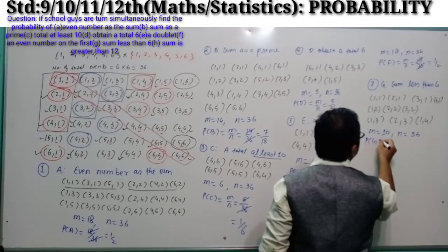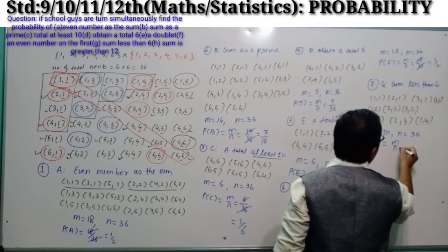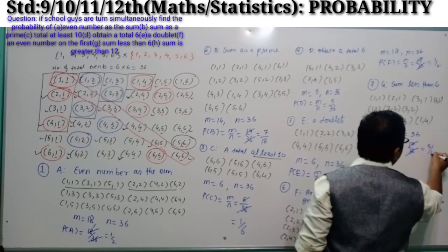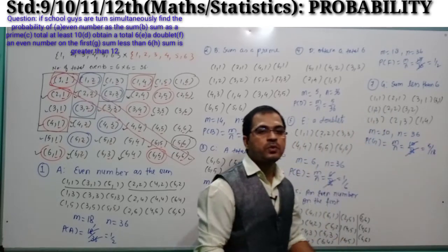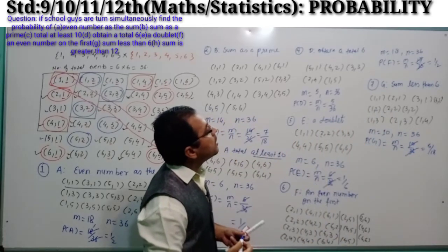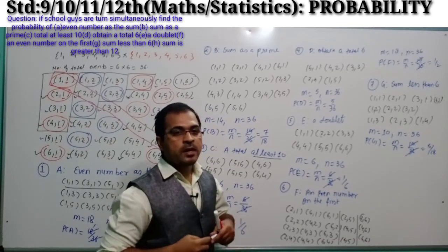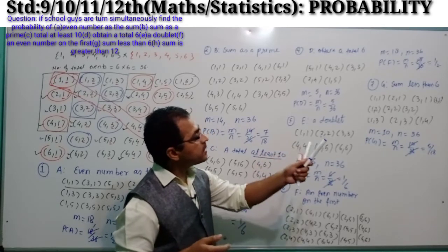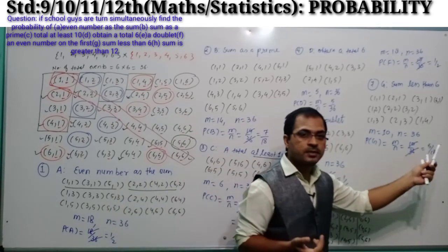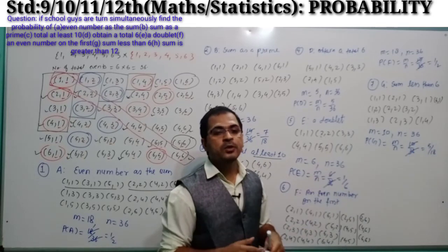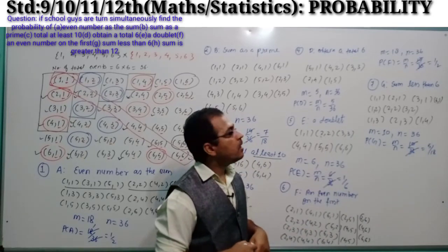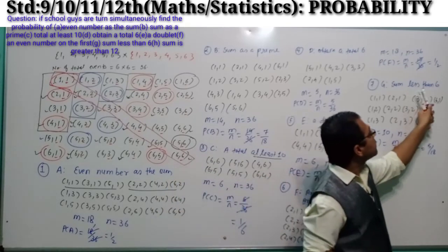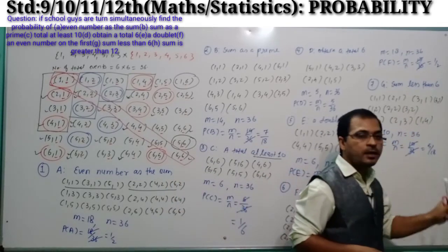So M = 10 and total number of events N = 36. P(G) = M/N = 10/36 = 5/18. We can conclude that if two dice are thrown simultaneously, the probability of getting a sum less than 6 is 5/18.